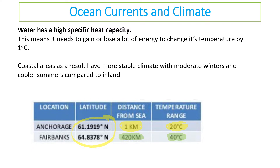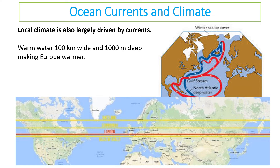To illustrate: a coastal location might go from 10°C to 30°C over the year, but an inland location has a greater range because the ocean isn't nearby to provide a cooling or warming effect. Local climate is driven by currents. Warm currents can be 100 kilometers wide and 1,000 meters deep. For example, these currents make Europe warmer.